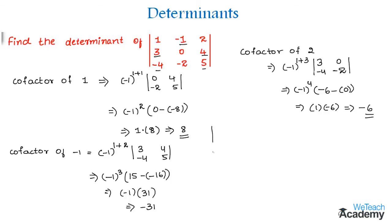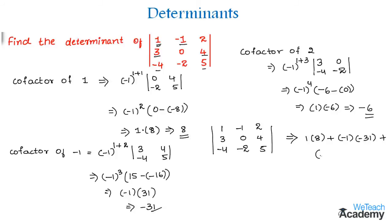Now using the formula to find the determinant, we multiply each element by its cofactor and sum the results: (1 × 8) + (-1 × -31) + (2 × -6) = 8 + 31 - 12 = 27. So the value of the determinant is 27.